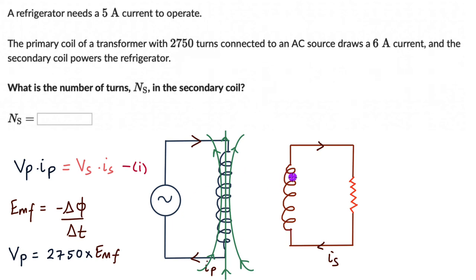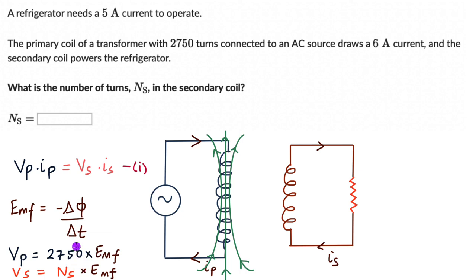The EMF induced in each turn of the secondary coil is exactly the same as the EMF induced in each turn of the primary coil. So the total voltage across the primary coil is Vp = 2750 × EMF per turn, and the total voltage across the secondary coil is Vs = Ns × EMF per turn. Dividing these two equations gives Vp/Vs = 2750/Ns.